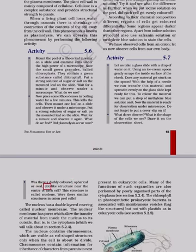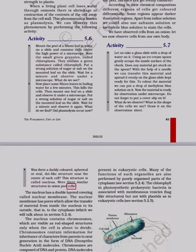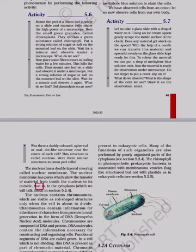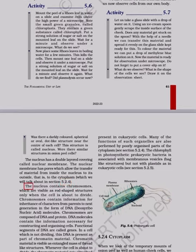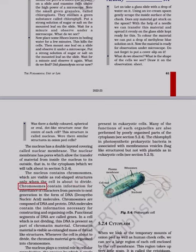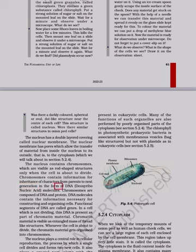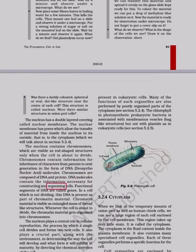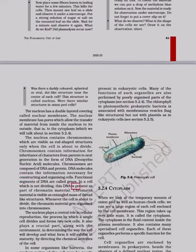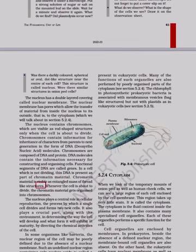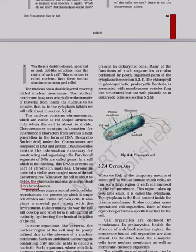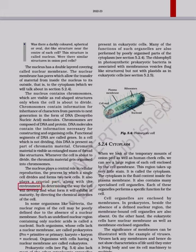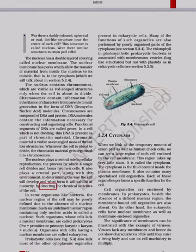Was there a darkly colored, spherical or oval, dot-like structure near the center of each cell? This structure is called the nucleus. Were there similar structures in onion peel cells? The nucleus has a double-layered covering called the nuclear membrane. The nuclear membrane has pores which allow the transfer of material from inside the nucleus to its outside — that is, to the cytoplasm. The nucleus contains chromosomes, which are visible as rod-shaped structures only when the cell is about to divide. Chromosomes contain information for inheritance of characters from parents to next generation in the form of DNA — deoxyribonucleic acid — molecules. Chromosomes are composed of DNA and protein. DNA molecules contain the information necessary for constructing and organizing cells. Functional segments of DNA are called genes. In a cell which is not dividing, this DNA is present as part of chromatin material, which is visible as an entangled mass of thread-like structures. Whenever the cell is about to divide, the chromatin material gets organized into chromosomes. The nucleus plays a central role in cellular reproduction and directs the chemical activities of the cell.